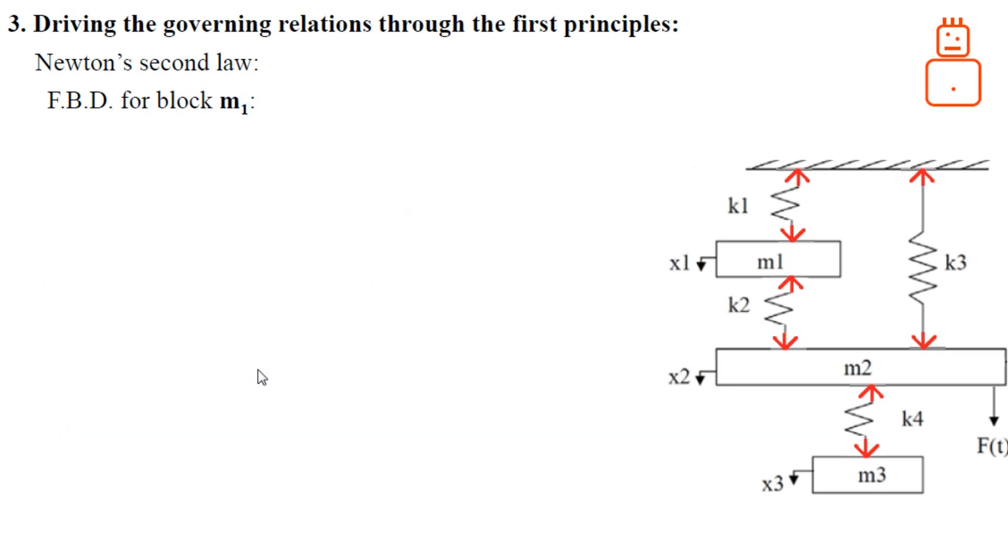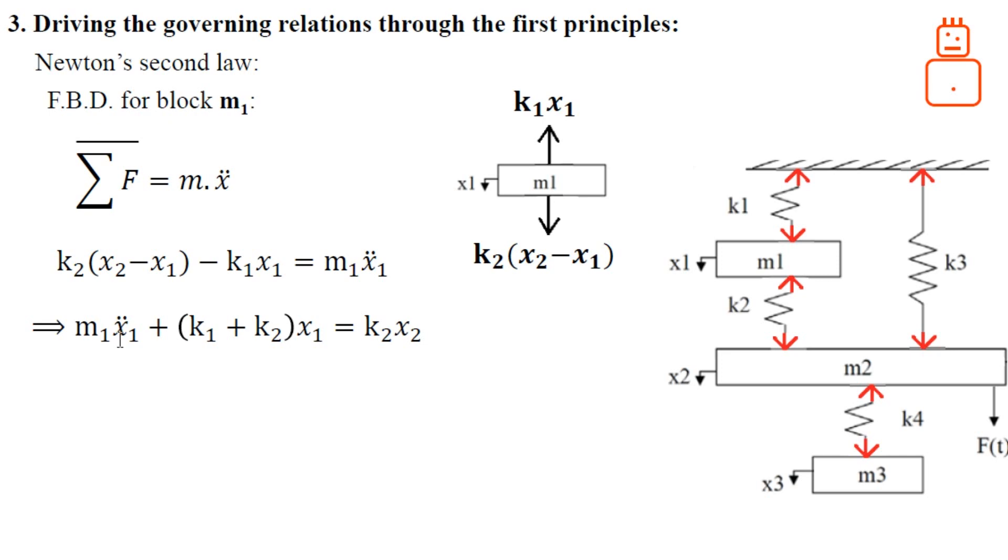Let's proceed to the final block which is m1. We have the force coming from the down spring and up spring. Applying Newton's second law, the forces that are directing downward are positive, so we have k2(x2 minus x1) positive, whereas k1·x1 is negative. Rearrange the system: x1 double dot and x1 all have positive signs, so this equation is also true.